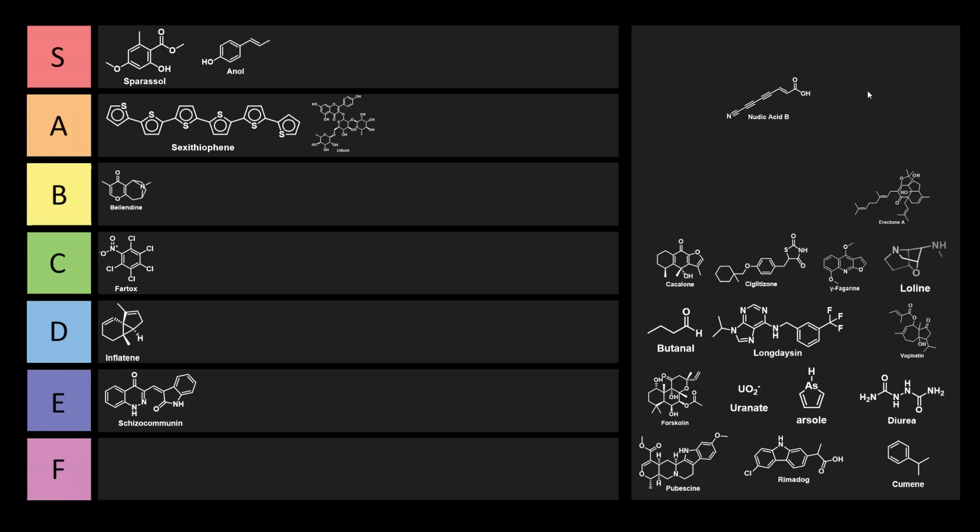Nudic acid. Nudic acid is kind of an interesting one. We have this interesting diine ending in a nitrile, which is kind of cool. Nudic acids come from a basidium mycete called tricholoma nudum. Nudic acids, again, it's a little bit unfortunate, but it's pretty good. You know, it could be better, but it's okay. I think we could probably put it in D tier. I think that's like fairly reasonable.